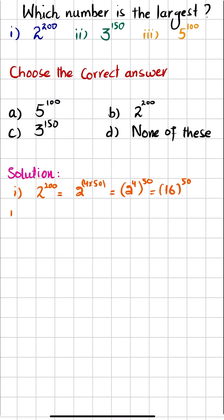Now the second one is 3 power 150. We also will take it as a multiple of 50. So 3 power 150 can be written as 3 multiply by 3 multiply by 50.